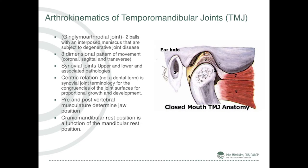The TMJ is a ginglimo-arthrodial joint — a rotating and sliding joint with three dimensions. The key point: pre- and post-vertebral musculature determine jaw position and cranio-mandibular position as a function of mandibular rest position. In other words, the neck positions the jaw and the jaw positions the neck. They move back and forth and interplay with each other.